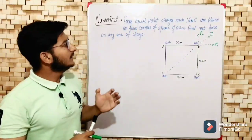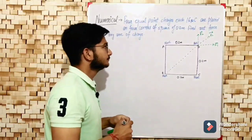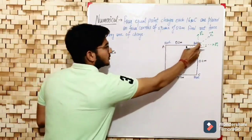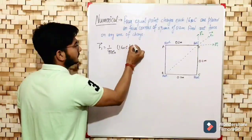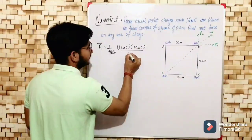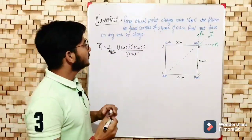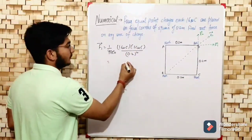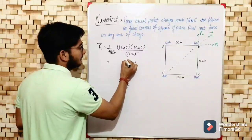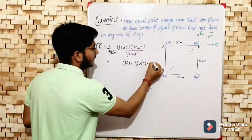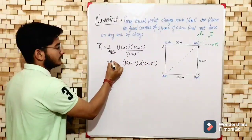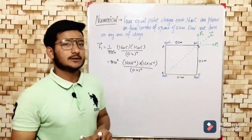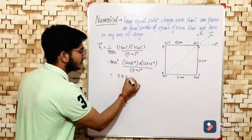Now we calculate these forces using Coulomb's law. F1 vector equals 1 over 4πε₀ times the product of both charges. We must convert microcoulombs to coulombs: 1 microcoulomb equals 10⁻⁶, so we get 16×10⁻⁶ for each charge. In place of 1/4πε₀ we put 9×10⁹, and the distance squared is (0.2)². Solving this, F1 comes out to be 57.6 Newton.